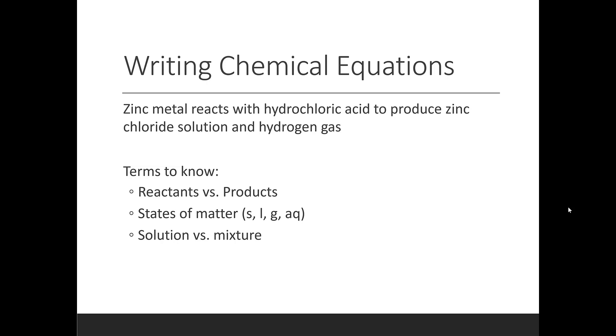So how do we write these chemical reactions? Well, there's some important terms that you need to know. We've got the reactants and we've got the products. What I want you to think of is chemical reactions kind of like a recipe. So your reactants are the stuff that you're mixing together in order to create whatever it is you're trying to create. And that would be your product.